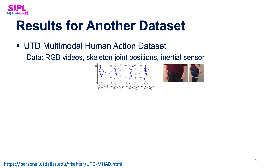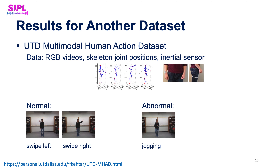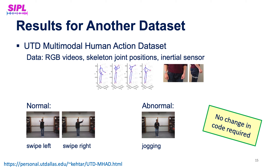To demonstrate that our method is data-agnostic and generalizes well, we applied it to another multimodal dataset from the University of Texas — a dataset for human action recognition through the fusion of video, wearable inertial sensor data, and skeleton position estimated by a Kinect camera. For this experiment, we defined hand swipe left and hand swipe right as normal actions and jogging as abnormal. We pre-processed the data into multivariate time series, applied the kernels, and used the Riemannian distance as a measure of abnormality — without changing a single line of code.